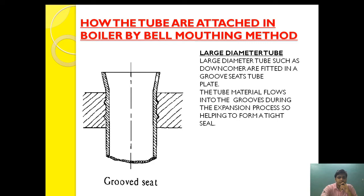For large diameter tubes, instead of only bell mouthing, a special groove seat structure is also provided. Large diameter tubes such as downcomers are fitted in a groove seat tube plate. The tube material flows into the groove during the expansion process, helping to form a tight seal and providing additional grip and support to prevent the tube from coming out.